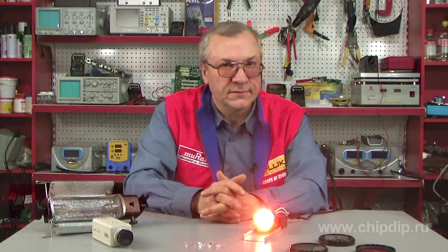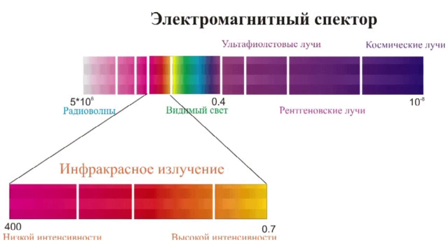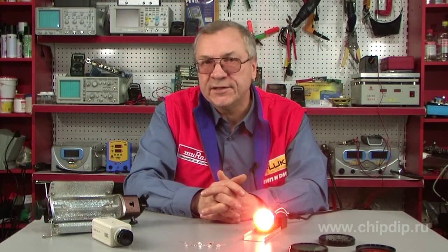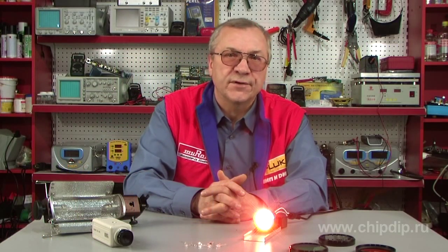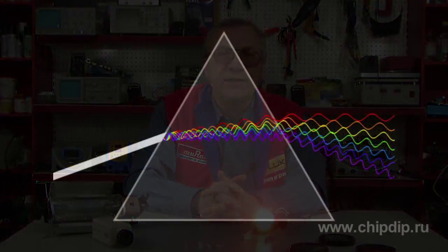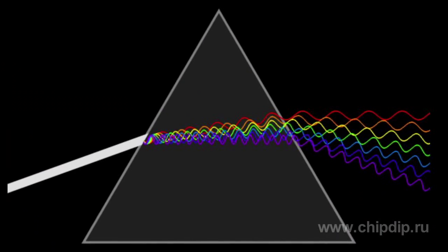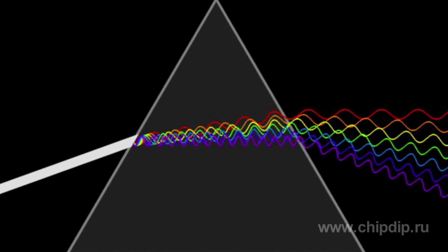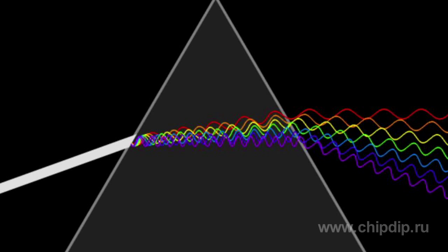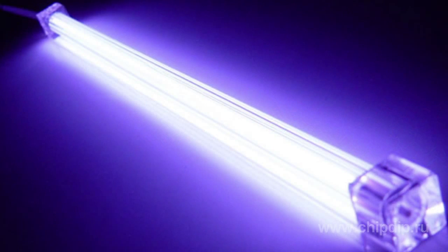Similar to visible and ultraviolet radiation spectra, infrared radiation spectrum may either be made up of discrete lines or be continuous. This depends on the infrared radiation source. Generally, optical properties such as transparency, reflection factor and refraction factor within the infrared domain substantially differ from properties within the visible and ultraviolet domains.